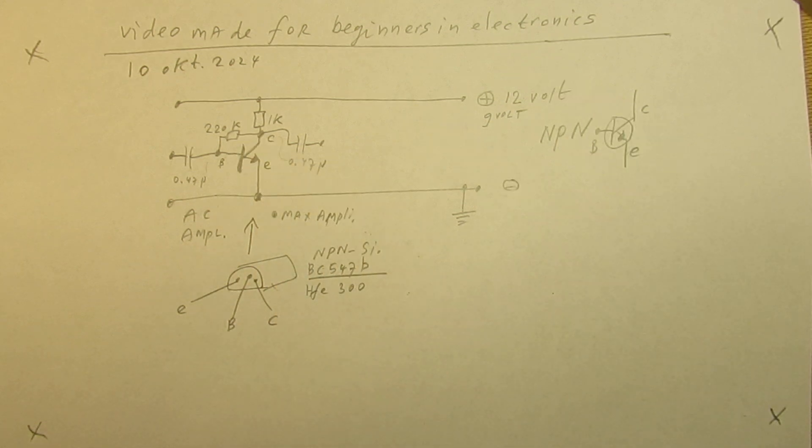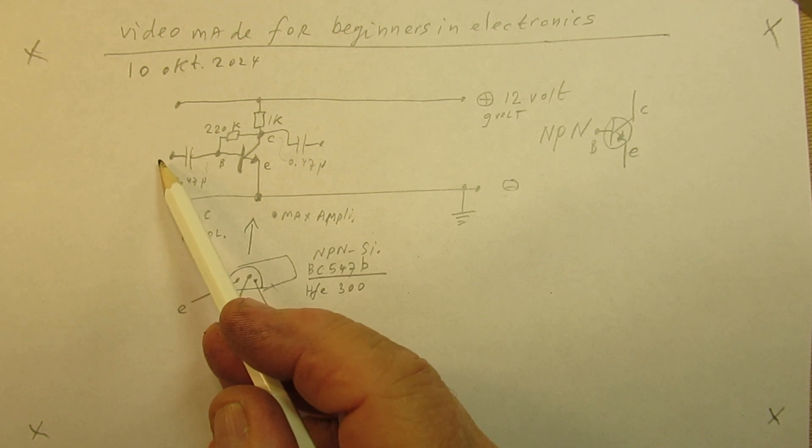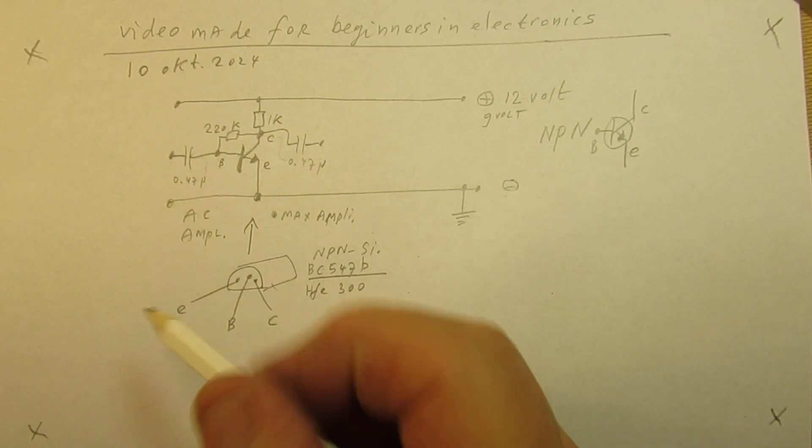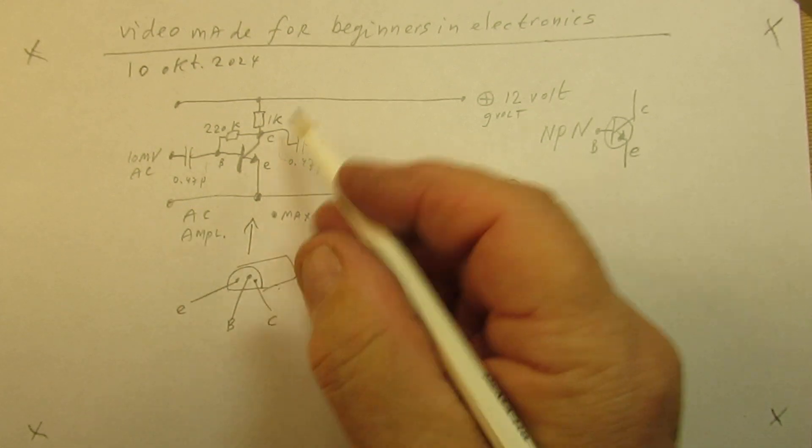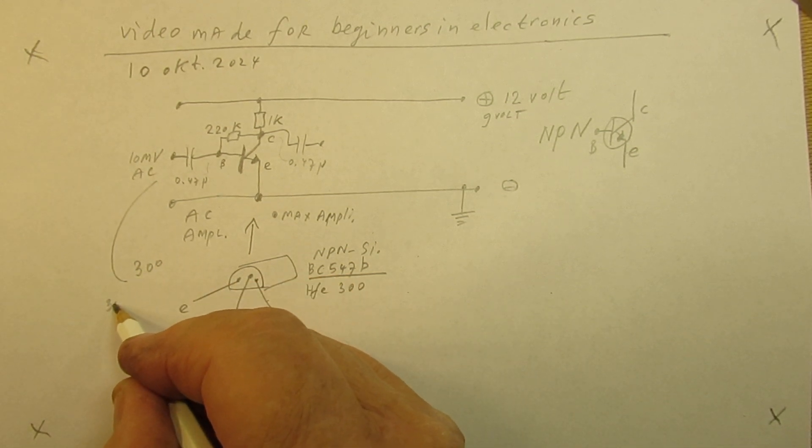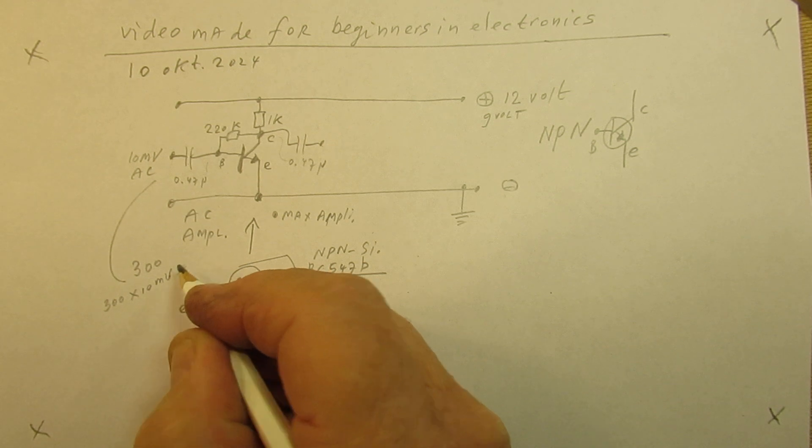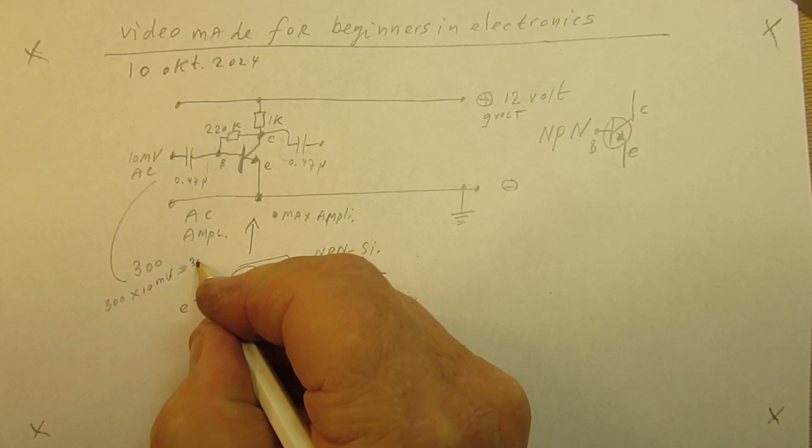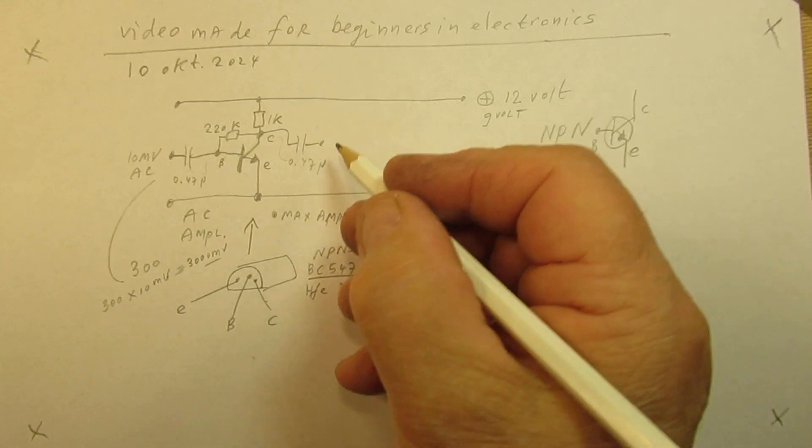So here is the most basic one transistor circuit that you can make. When you send here a voltage of 10 millivolts AC, it will be amplified by 300, so 300 multiplied by 10 millivolts is 3 volts AC.